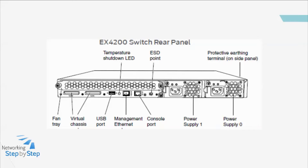On the Management Options page, use either the default VLAN, called Default, or create a new VLAN. On the Manage Access page, you can enable Telnet, SSH, and SNMP services on the switch. Click Finish to activate the initial configuration on the switch.